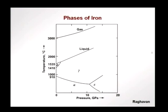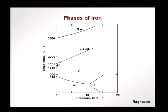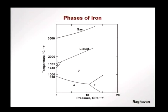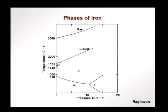Here we see the phase diagram we have looked at before. This is the austenite phase — this region is where the austenite is stable, and here we have ferrite being stable. This change in phase occurs at 910 degrees. Beyond about 1535 degrees there is melting and we have molten iron. This is where the delta phase is stable, and here we have the epsilon phase.